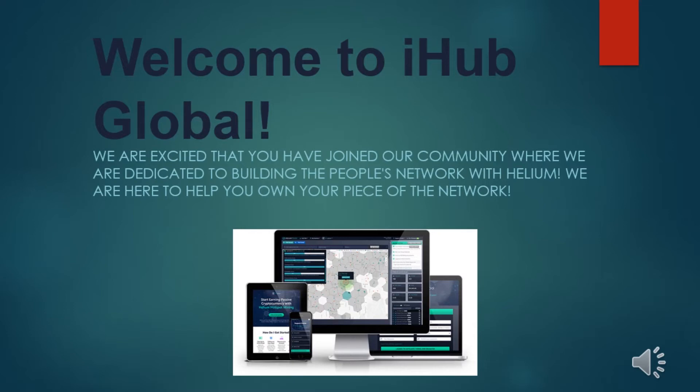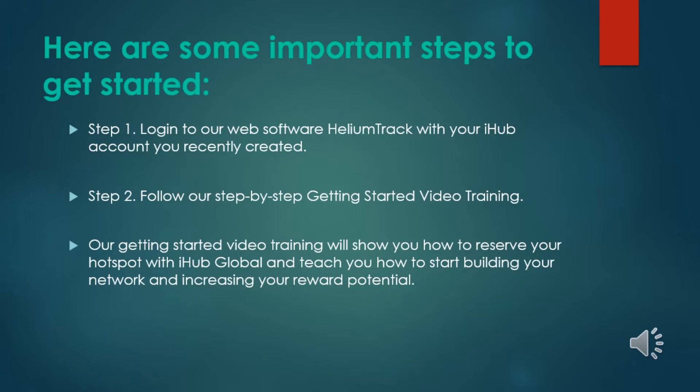Welcome to iHub Global. We are excited that you have joined our community where we are dedicated to building the people's network with Helium. We are here to help you own your piece of the network. Here are some important steps to get started. Step 1: Log into our web software Helium Track with your iHub account you recently created. Step 2: Follow our step-by-step getting started video training, which will show you how to reserve your hotspot and teach you how to start building your network and increasing your reward potential.